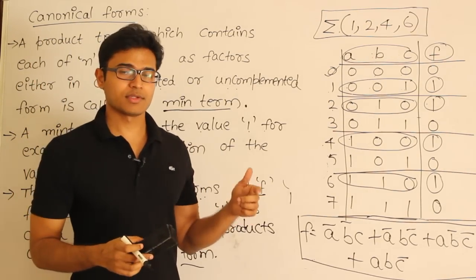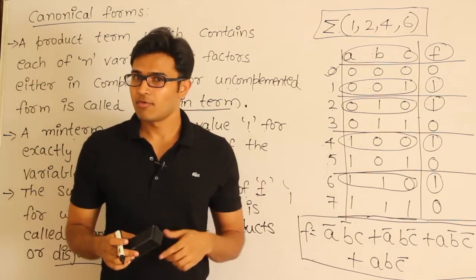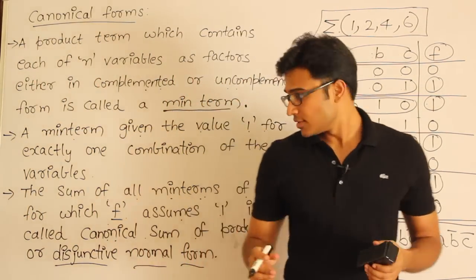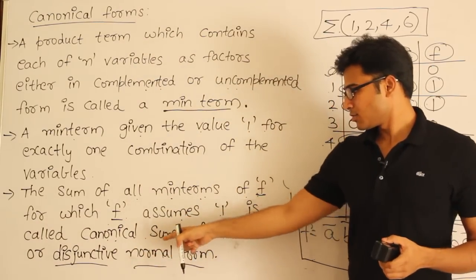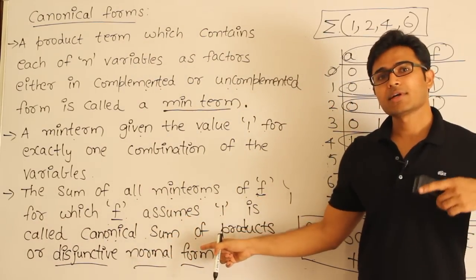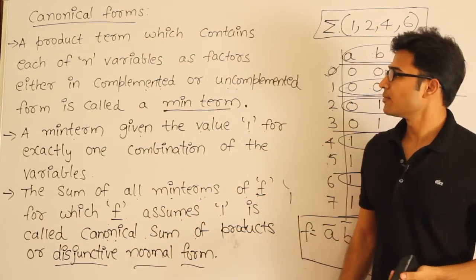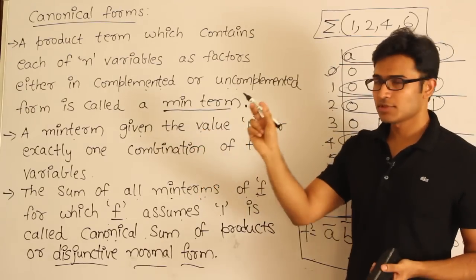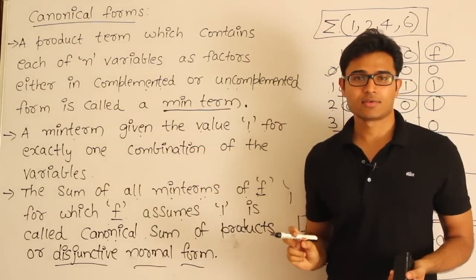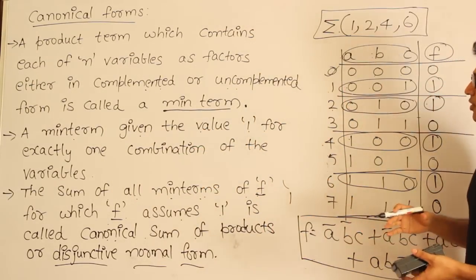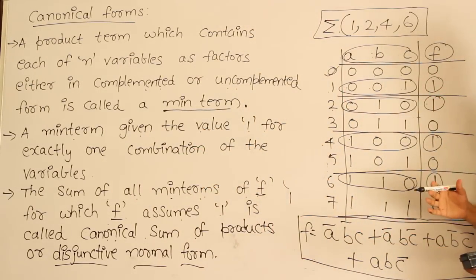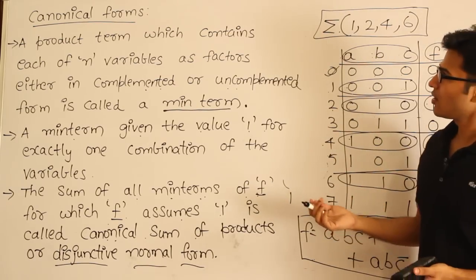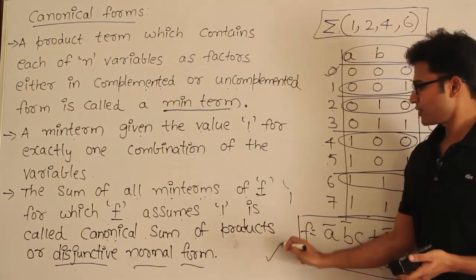There is one more canonical form — the conjunctive normal form, which is similar but with slight changes. We shall see how to represent a function in that form, and then how to use these functions in general.